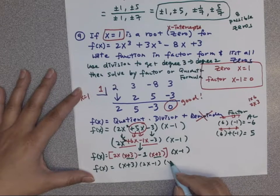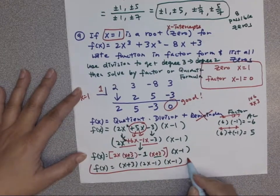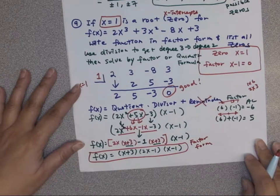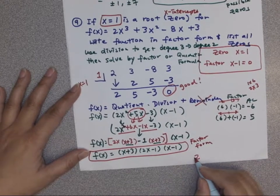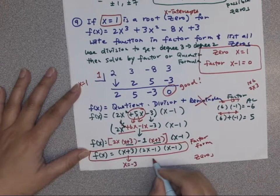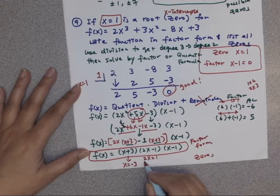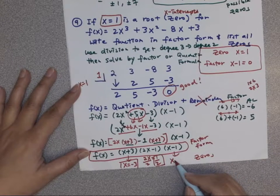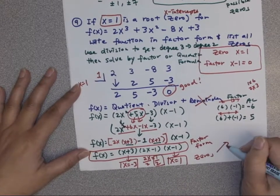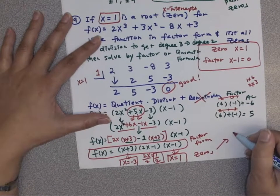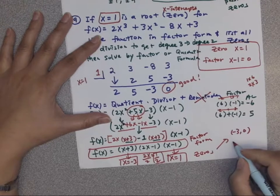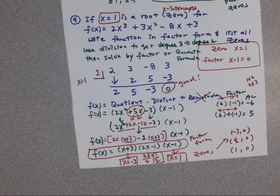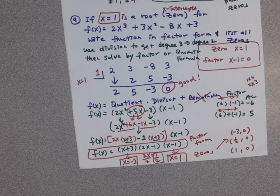Okay so now the factors are f(x) equal to (x + 3)(2x - 1)(x - 1), so that would be my degree 3 function in factor form. Don't forget to start with f(x) because they ask for the function. And for the zeros we have x equal to negative 3, this is basically 2x equal to 1 so divided by 2, x equal to 1 half, and then this one x equal to 1. So the zeros are x equal to negative 3, or you can say negative 3 comma 0, 1 half comma 0, and 1 comma 0. So we divide and then we factor or use quadratic formula.